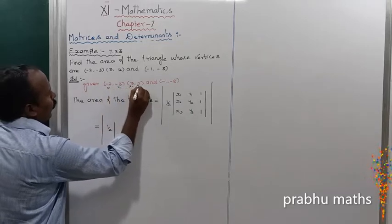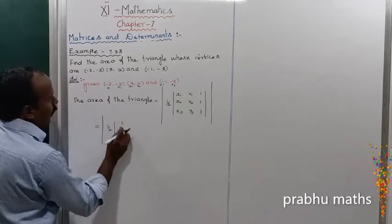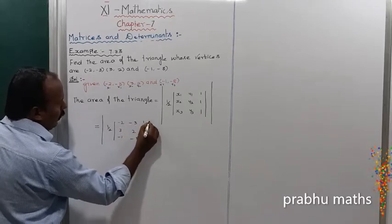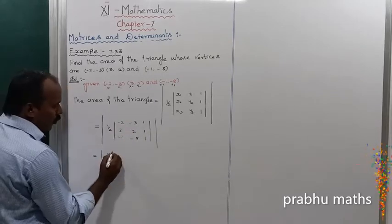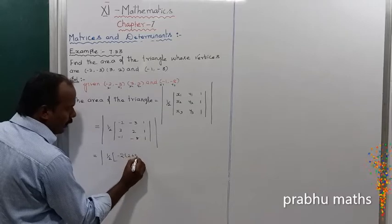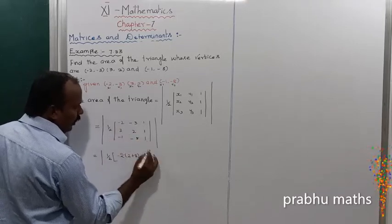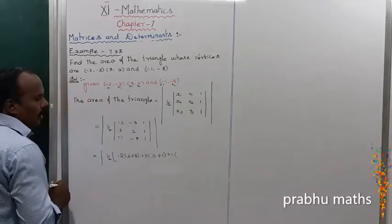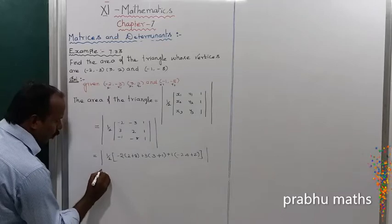So substituting: absolute value of 1/2 into the determinant with (X1, Y1) = (-2, -3), (X2, Y2) = (3, 2), (X3, Y3) = (-1, -8). Expanding along row 1: minus 2 into (2 minus minus 8), minus into (minus 1 minus minus 1), plus 1 into (3 into minus 8 minus 24).